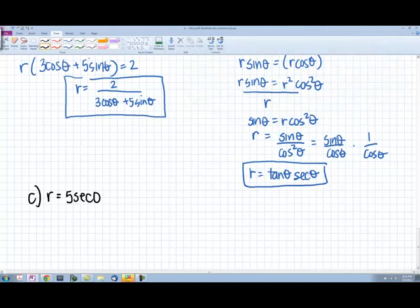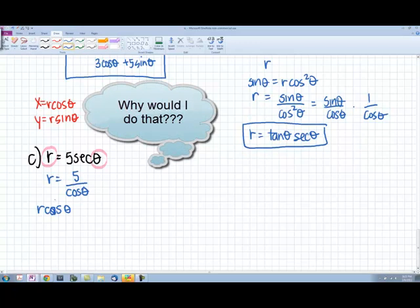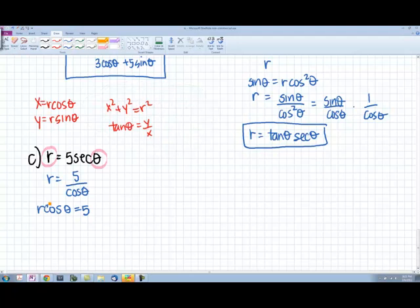Let's check out r equals 5 secant theta. In this case, I'm going to write secant theta as 1 over cosine theta. Then I can multiply both sides by cosine theta, which is going to give me something really useful on the left-hand side. r cosine theta can be replaced with an x. So this is an equation for a vertical line, x equals 5.